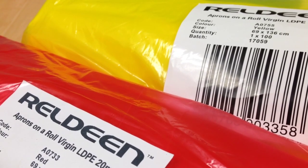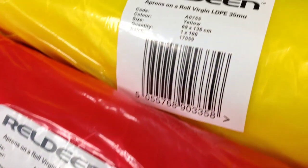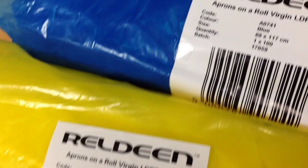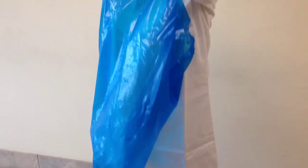The batch number system also helps with traceability. And with a choice of three thicknesses depending on the type of use in the four key food industry colours, RELDEEN allows you to select the product to suit your needs and budget.